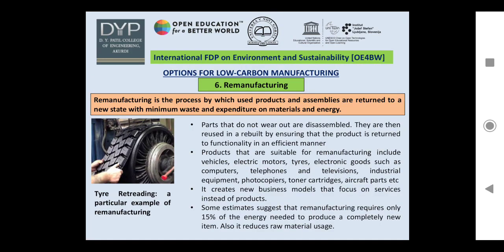The sixth option for low carbon manufacturing is remanufacturing — the process by which used products and assemblies are returned to a new state with minimum waste and expenditure on materials and energy. Parts that do not wear out are disassembled, reused, and rebuilt, ensuring the product is returned to full functionality without compromising technical aspects. Products suitable for remanufacturing include vehicle components, electric motors, tires, electronic goods, industrial equipment, photocopiers, toner cartridges, aircraft parts, etc. It creates a new business model focusing on the service industry rather than the product industry.